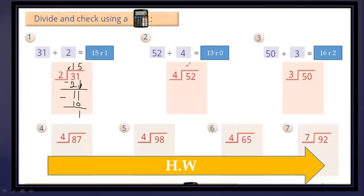52 divided by 4: 5 divided by 4 equals 1; 1 multiplied by 4 equals 4; subtract — remainder 1. Bring down the 2: 12 divided by 4 equals 3; 3 multiplied by 4 equals 12; the remainder equals 0.